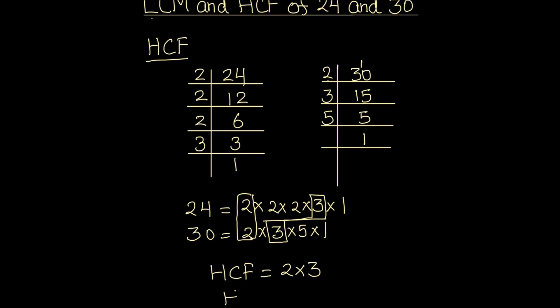So the HCF of 24 and 30 is 2 times 3, which is 6. This is the HCF of the two numbers, and this is how we find the HCF using prime factorization.